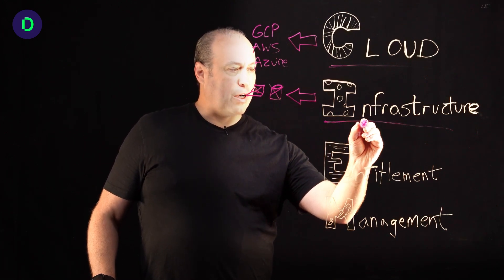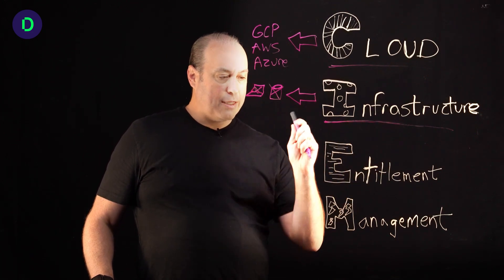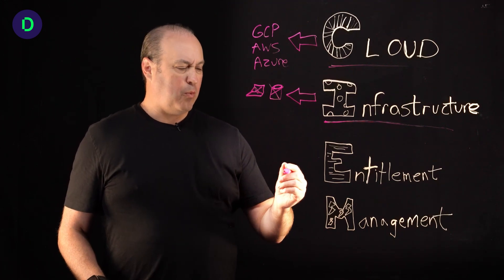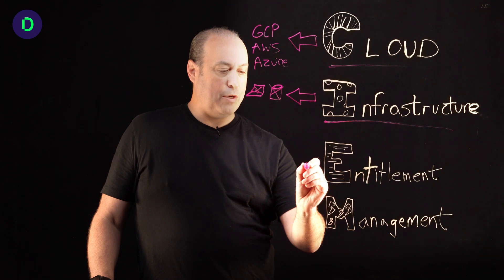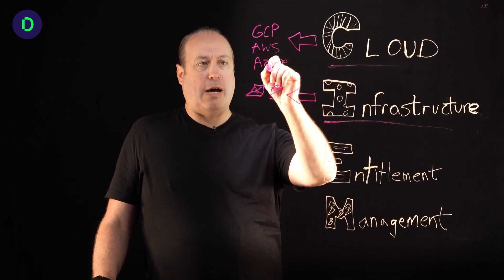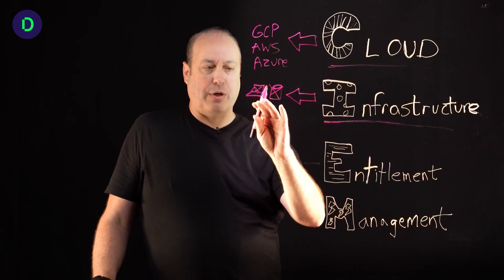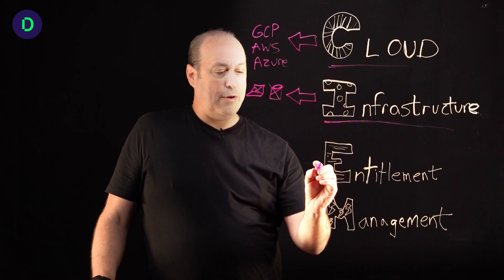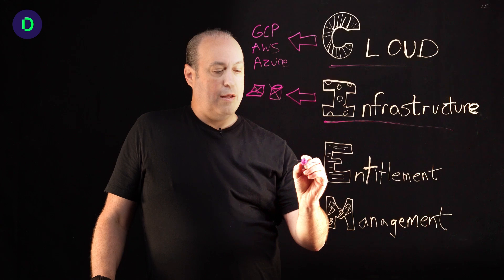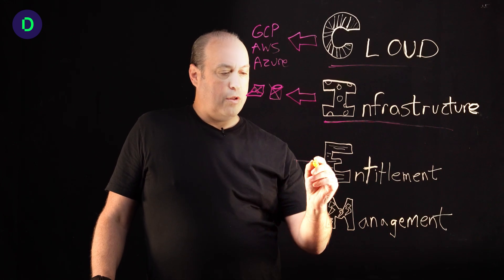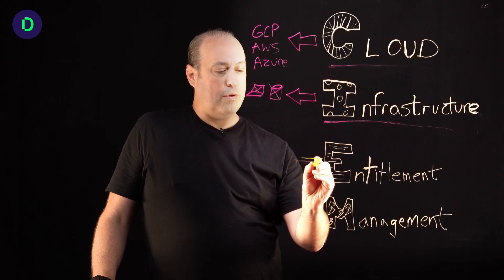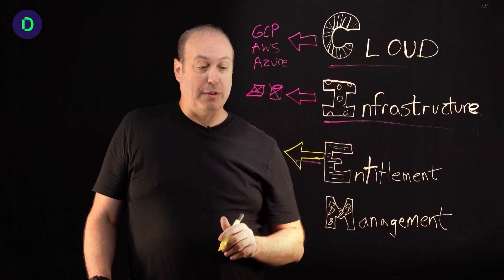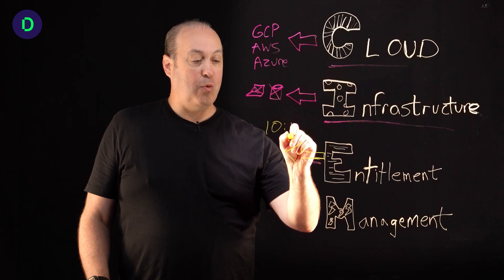That's what we mean by infrastructure here in CIEM. Next up is where it starts to get fun: entitlement. What we mean by entitlement is the situation where you're now looking in your cloud at this infrastructure and you're asking yourself who has access to what. Now, in cloud environments, the number of machines now outnumbers the actual number of humans, sometimes a ratio of 10 to one.